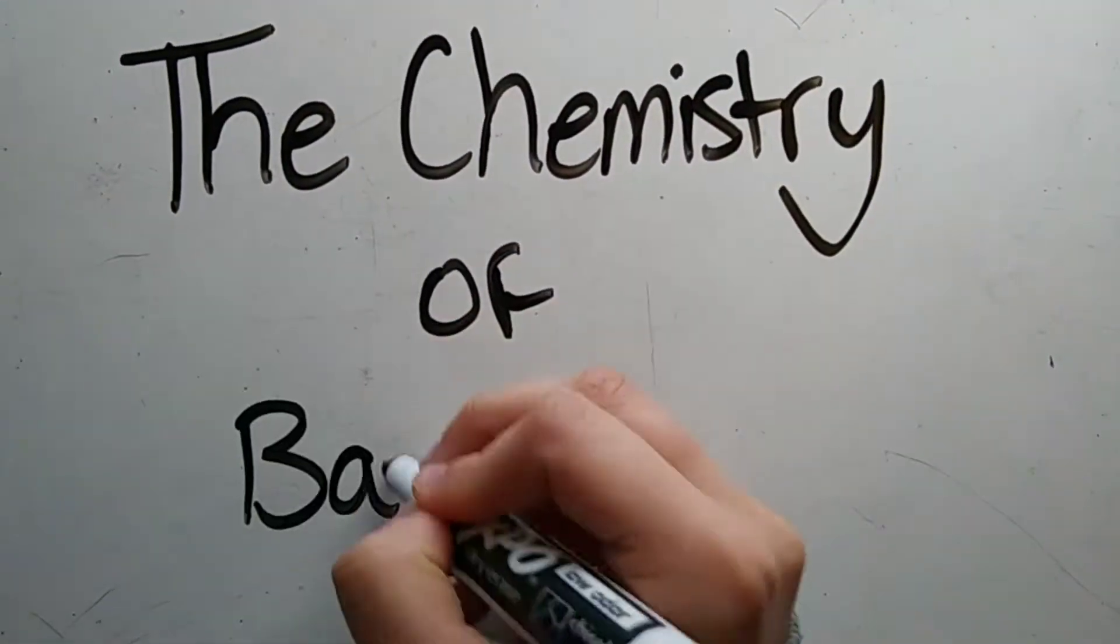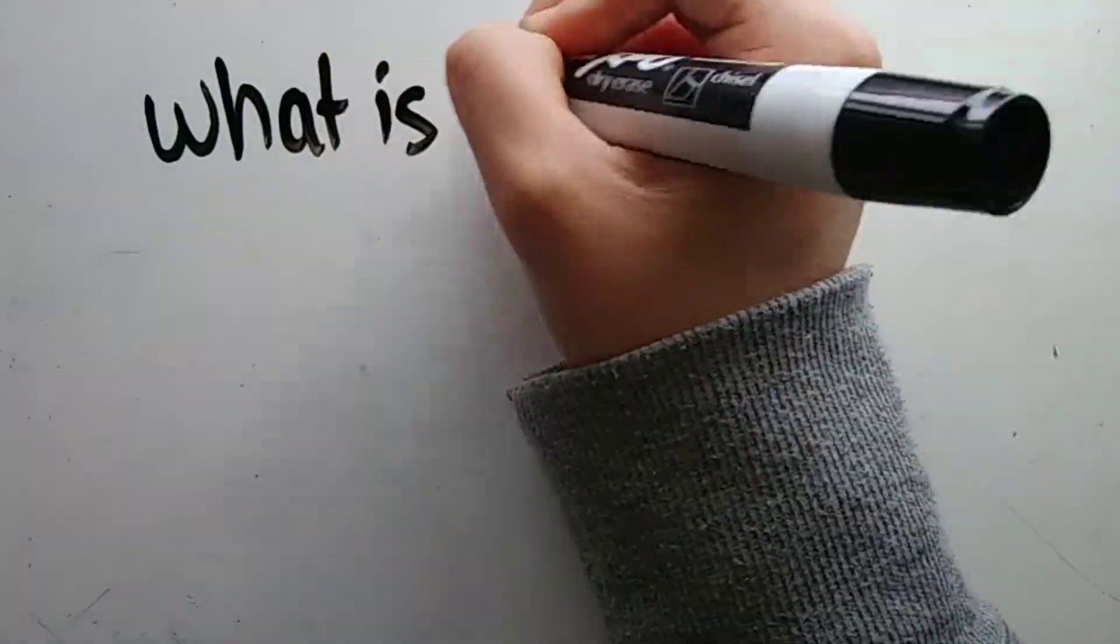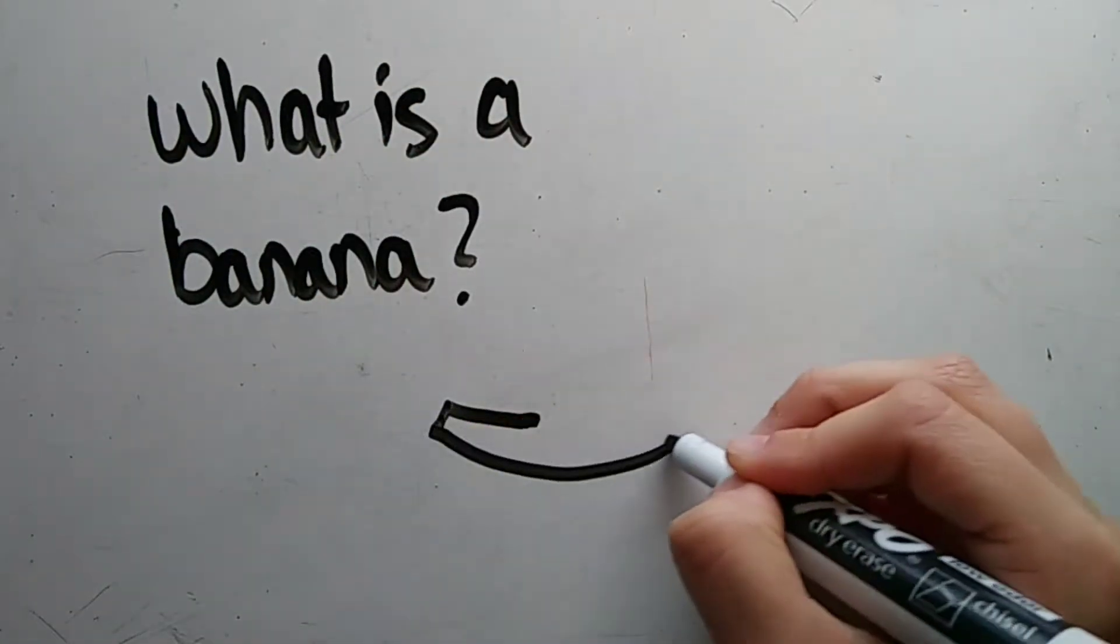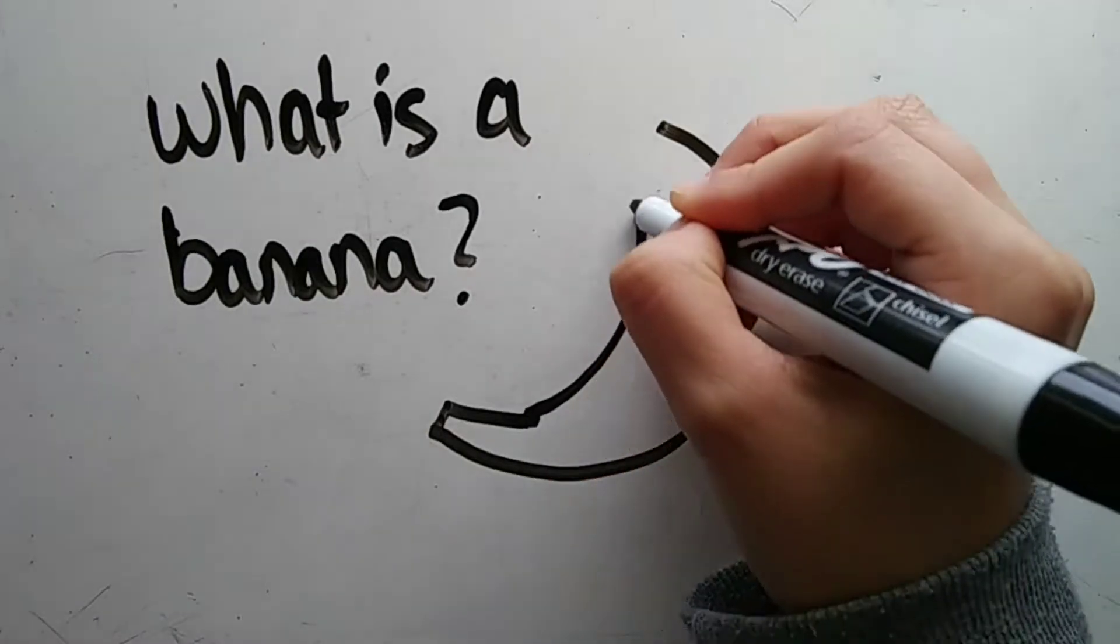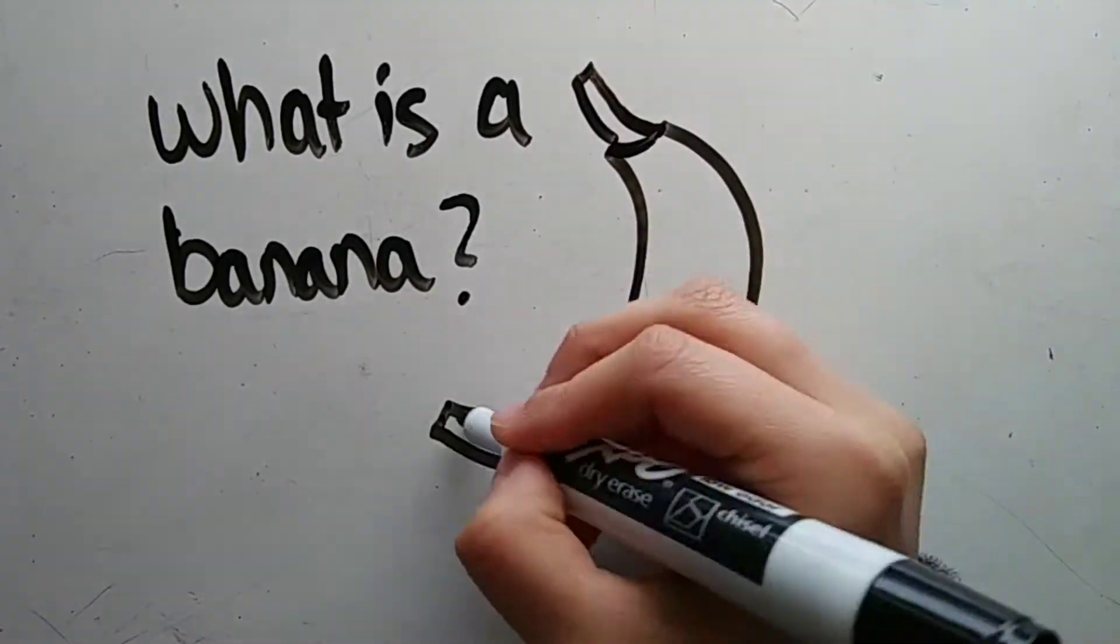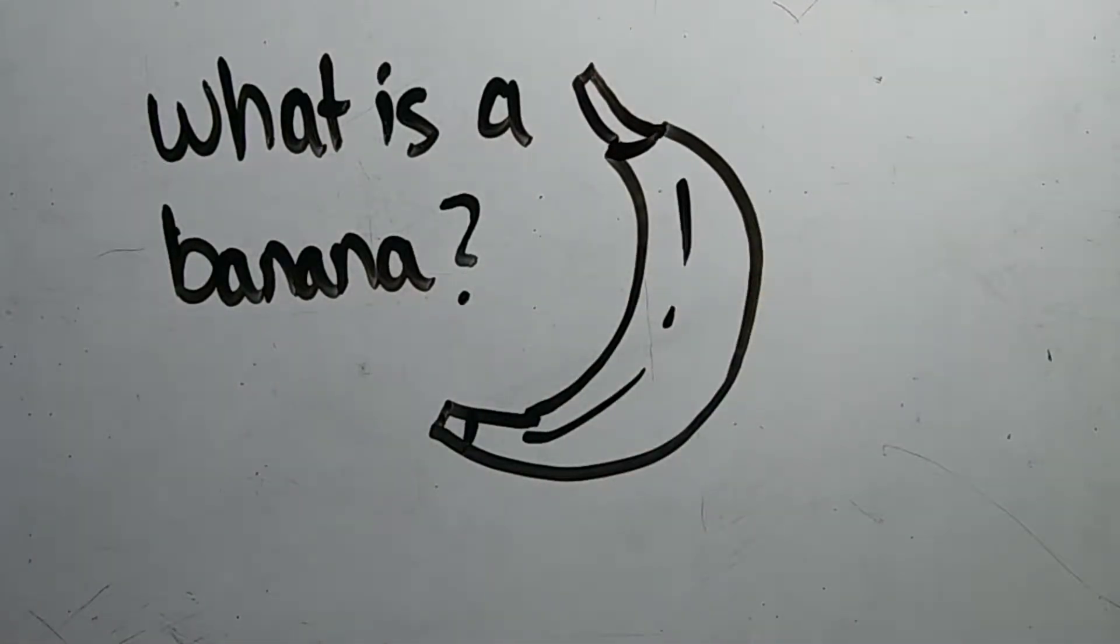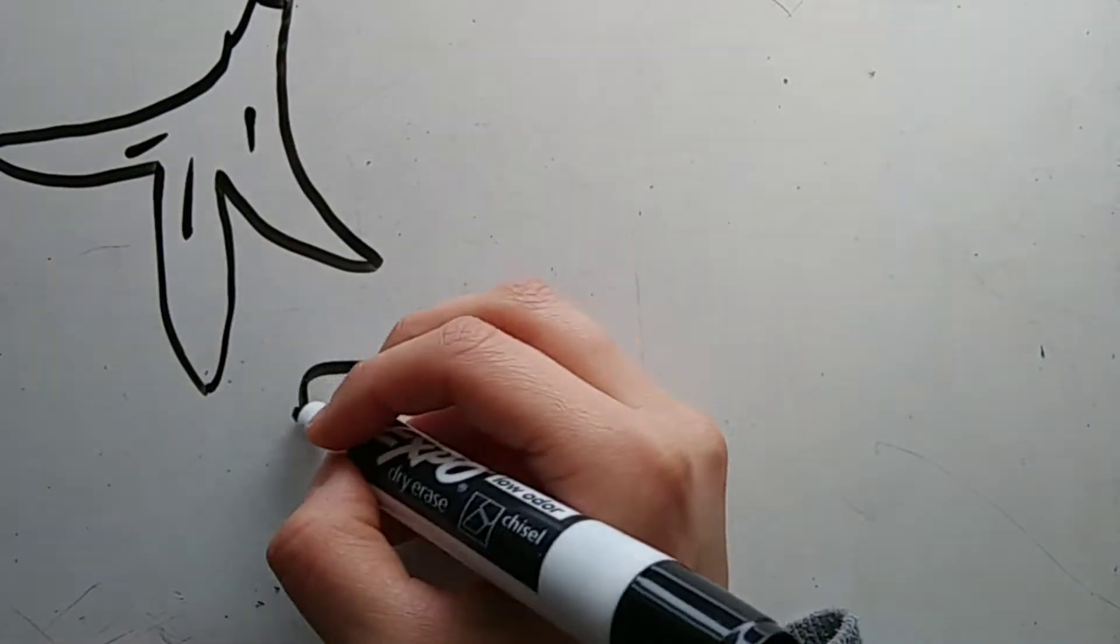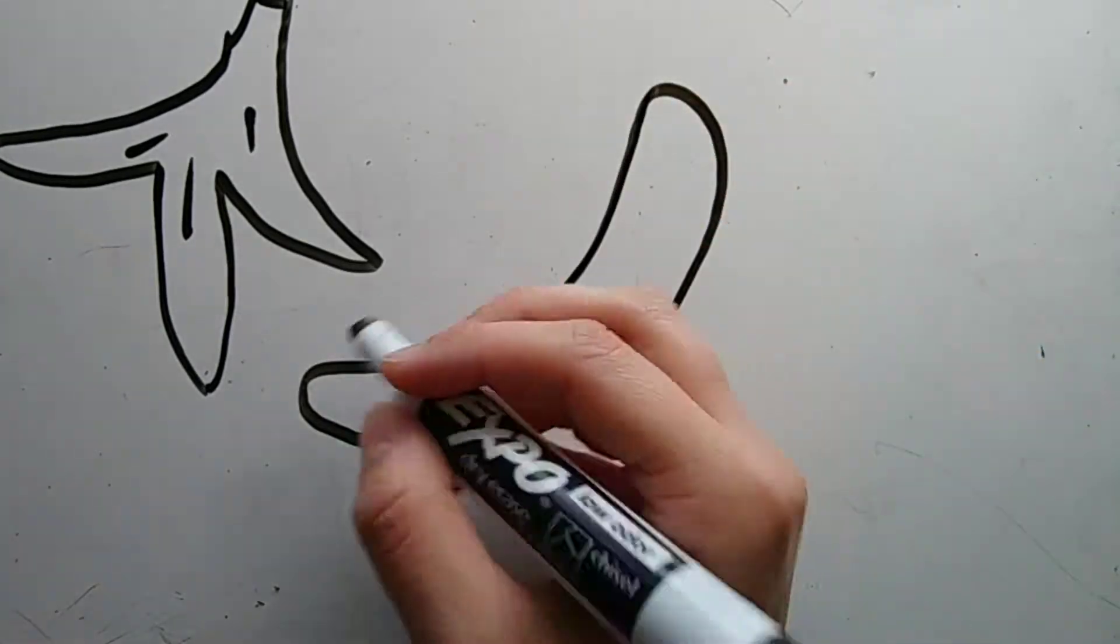The chemistry of bananas. What is a banana? I know you may be thinking what kind of a question is that, but there is so much more the average person doesn't know about this popular yellow fruit. So what exactly is a banana? A banana is a tropical fruit with a peelable skin and a fleshy pulp that you eat.